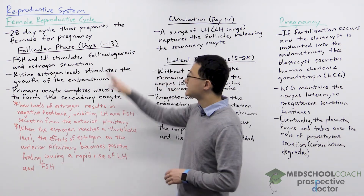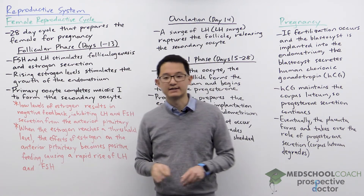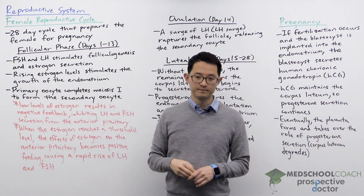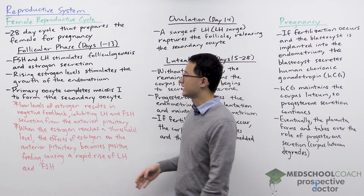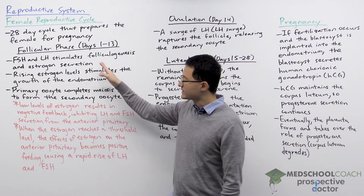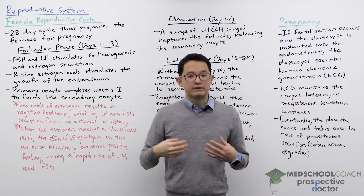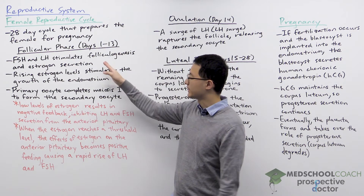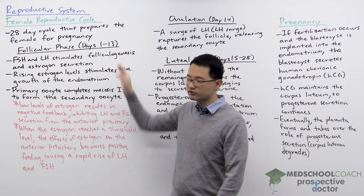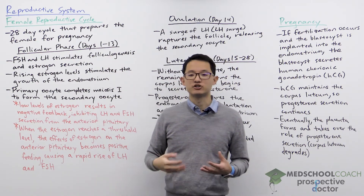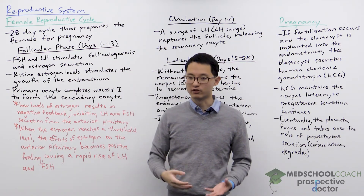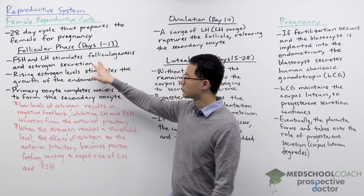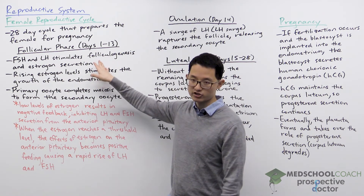The first phase is the follicular phase, which consists of the first 13 days of the cycle. During this phase, FSH and LH are released from the anterior pituitary and they stimulate folliculogenesis, which is the maturation of the follicle. The follicle in response will secrete estrogen.